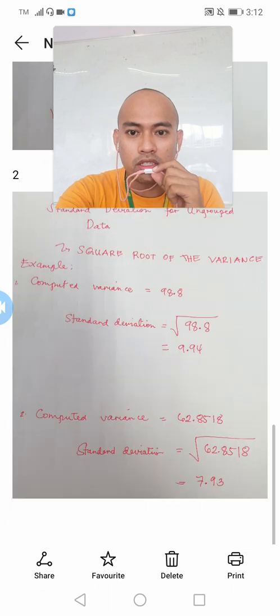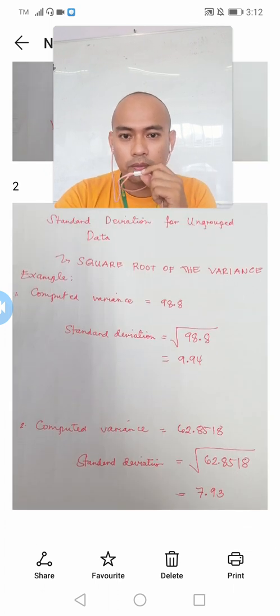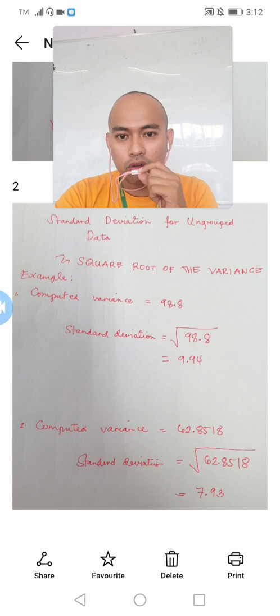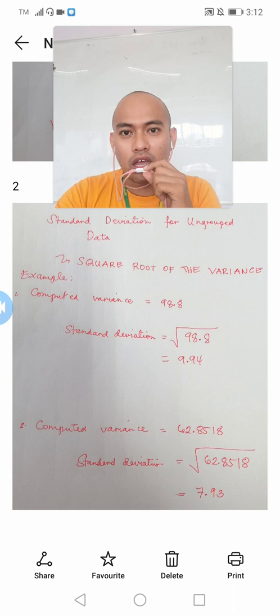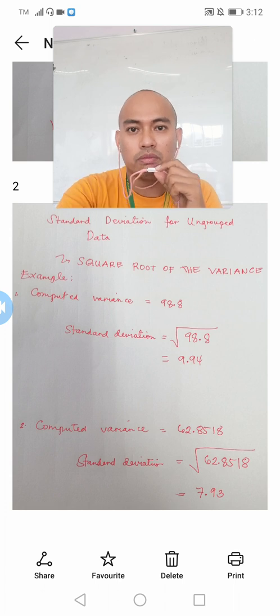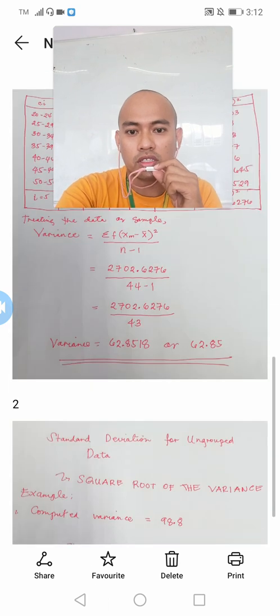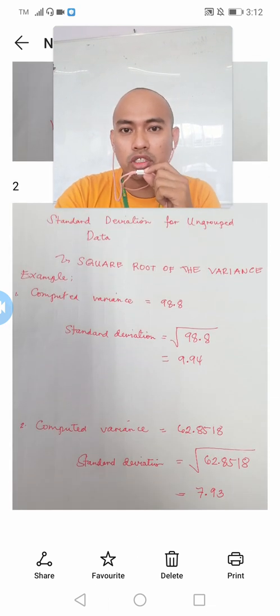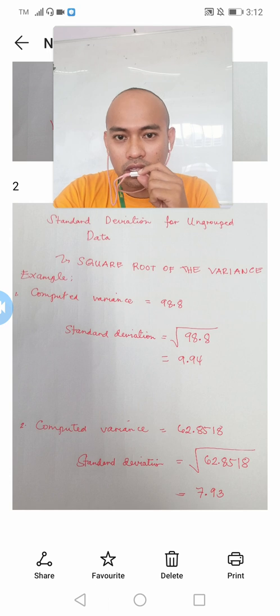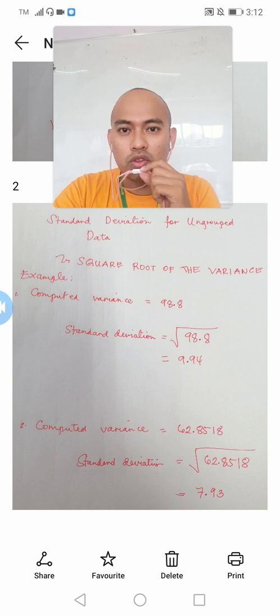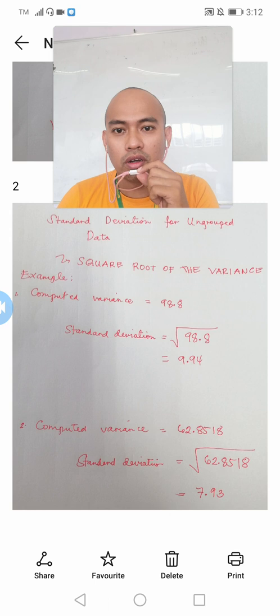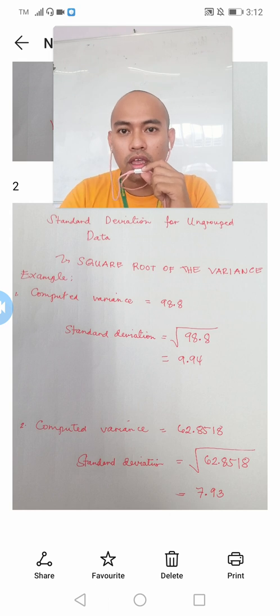In the same manner, in the second example the variance for grouped data, given the variance of that particular grouped data which is equal to 62.8518, just get the square root, we can now have the value of that standard deviation of this particular data set and it will give you a standard deviation of 7.93. So this is now the end of my video presentation with regards to these examples of variance and standard deviation for both ungrouped data and grouped data. Thank you again for watching this video and don't forget to subscribe to my channel. Have a good day everyone.